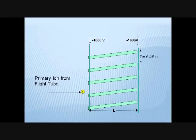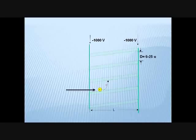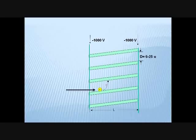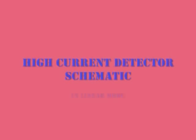The ions reach the detector where a high potential of 1,000 volts is supplied across the plates. As a result, the ion bounces from one plate to another. This signal is amplified to about 1,000 times and peaks are generated as output.